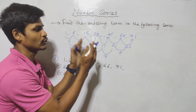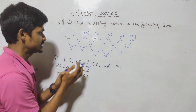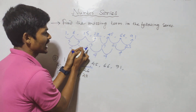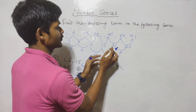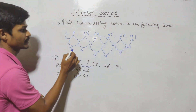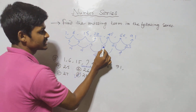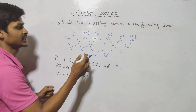The second difference: 5, 9, 13, 17, 21, 25 — with a constant difference of 4 each time.